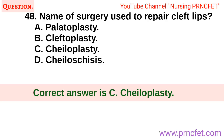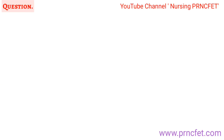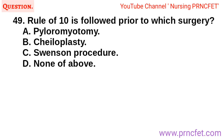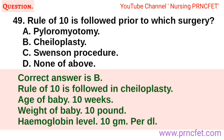Question 48: The correct answer is C. Cheiloplasty. Question 49: Rule of 10 is followed prior to which surgery? A. Pyloromyotomy. B. Cheiloplasty. C. Swenson procedure. D. None of the above. Correct answer is B. Rule of 10 is followed in Cheiloplasty: age of baby — 10 weeks, weight of baby — 10 pounds, hemoglobin level — 10 grams per dL.